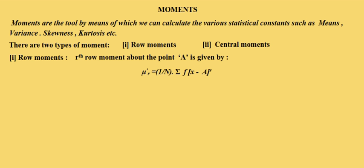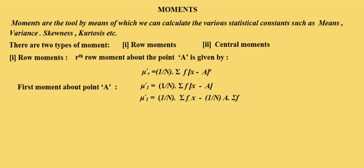By putting r equal to 0, 1, 2, 3, and 4 we can get the 0th, 1st, 2nd, 3rd, and 4th raw moment about point A. We will discuss only the first raw moment about point A, obtained by putting r equal to 1. So the first moment about point A is denoted by mu 1 dash, and its value equals 1 by n into summation fx minus a power 1, which equals 1 by n summation fx minus 1 by n times a into summation f.